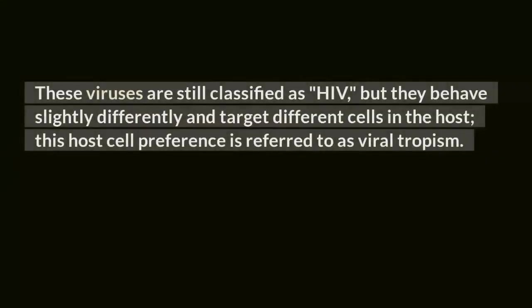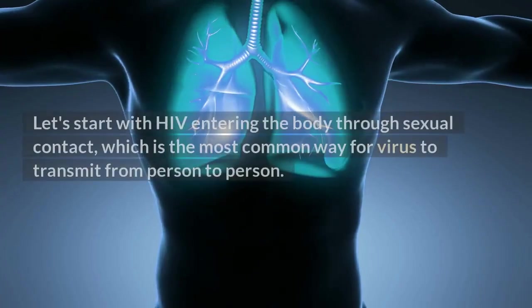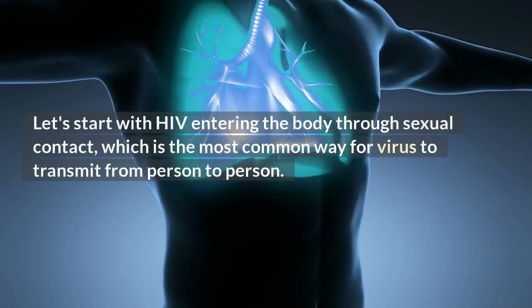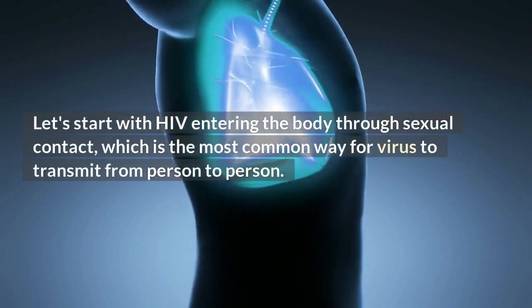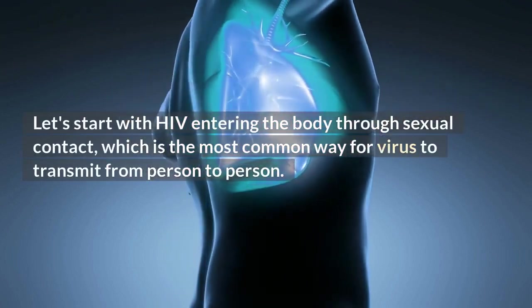One thing to keep in mind is that HIV is renowned for making mistakes during replication and can mutate into slightly different strains during infection. These viruses are still classified as HIV but behave slightly differently and target different cells — a host cell preference referred to as viral tropism. HIV most commonly enters the body through sexual contact, which is the most common way for the virus to transmit from person to person.